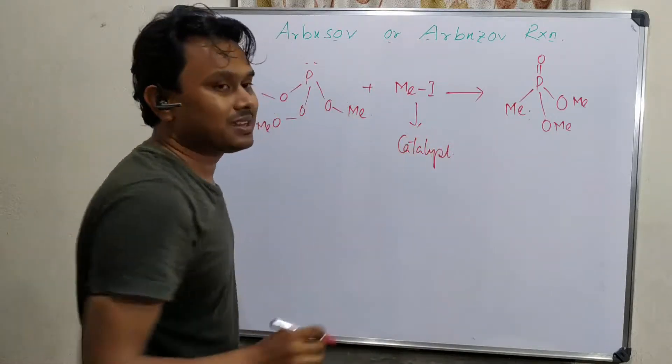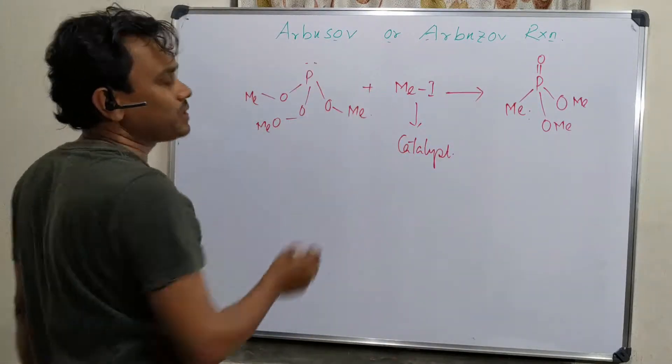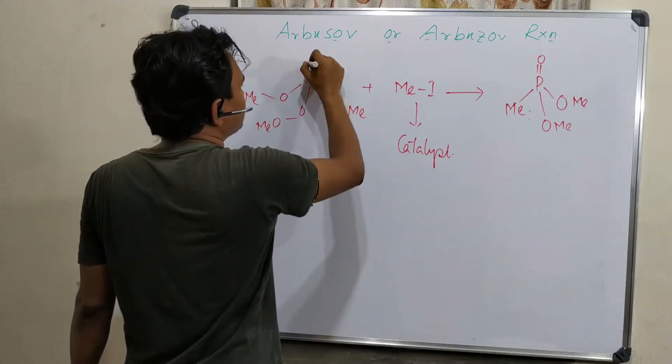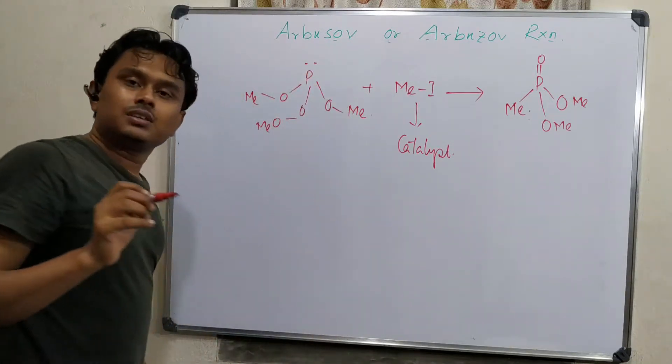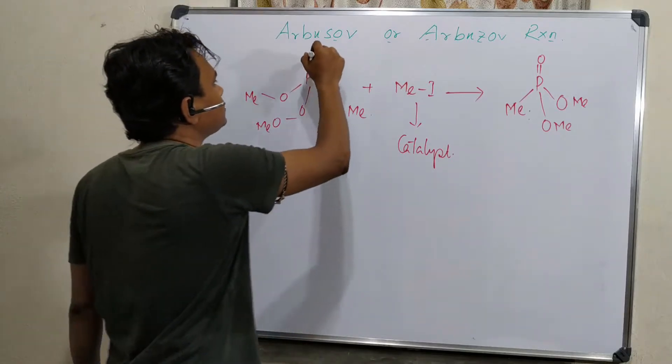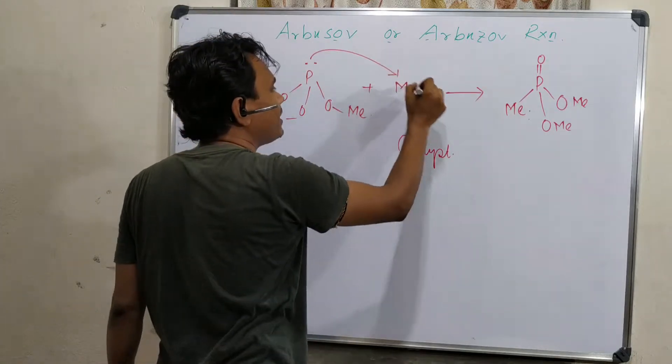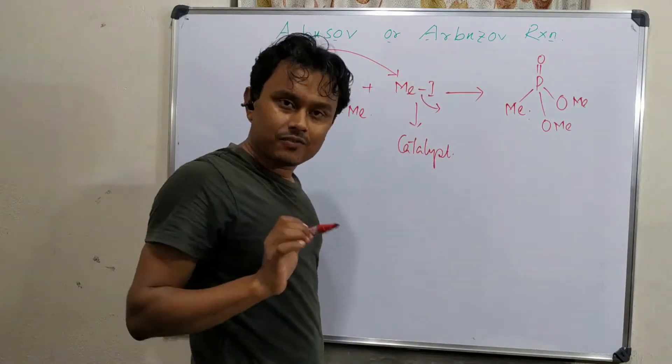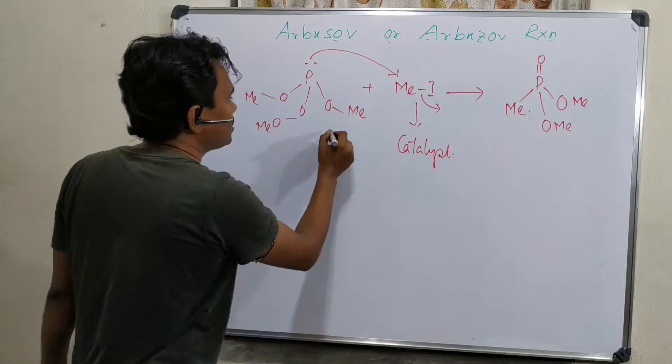Let's explain. Generally, it is expected that this is reacting, but actually it is not reacting. So phosphorus, we know, is a good nucleophile, a soft base, so this will attack. Another thing: iodide is also a good leaving group. Two points: nucleophilicity of phosphorus and good leaving character of iodide.